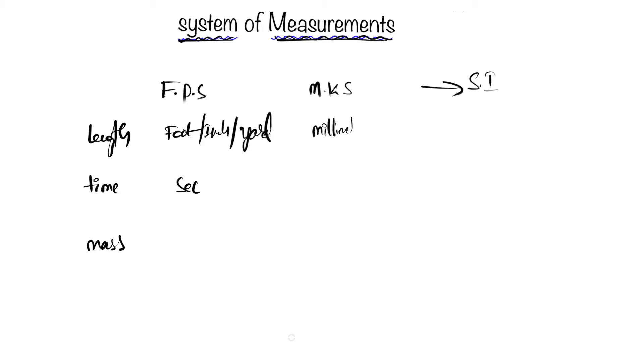meters or millimeters. Time is always in seconds. For mass—in FPS we measure it in pounds, and in MKS we measure it in kilograms. SI also uses meters, seconds, and kilograms.